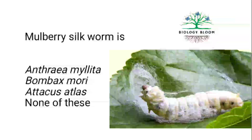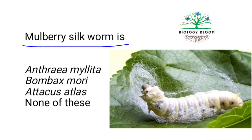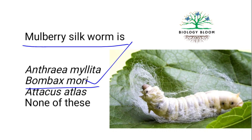Mulberry silkworm — it is Bombyx mori. Bombyx mori is related to Morus alba, which is the botanical name for mulberry.